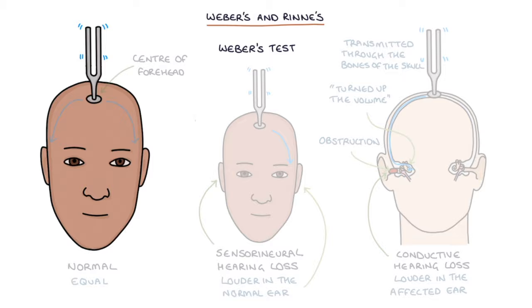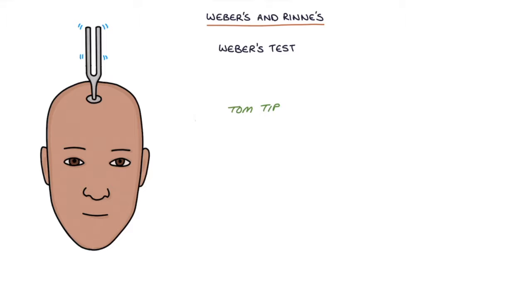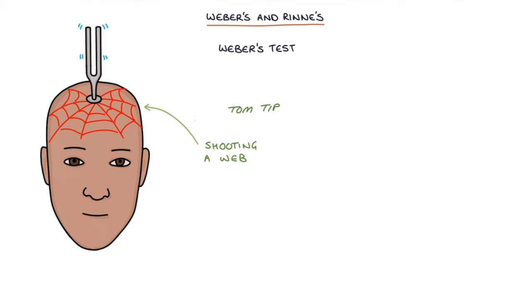A Tom tip for you: the way I remember which way round these tests are is to picture Spider-Man shooting a web — meaning Weber's test — right in the middle of someone's face, which is where you would put the tuning fork in the middle of their forehead.